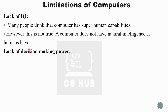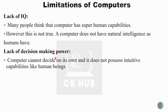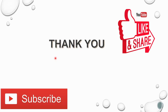So we generally call normal computers lacking IQ a limitation. Lack of decision-making power is another limitation. The computer cannot decide on its own and it does not possess intuitive capability like human beings. So we have covered the characteristics of computers — advantages and disadvantages. This is a simple but important topic for exams.